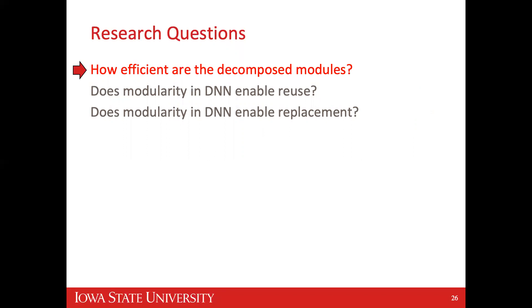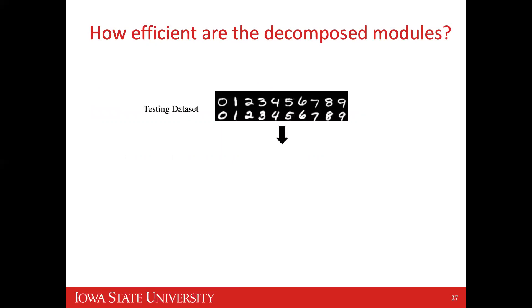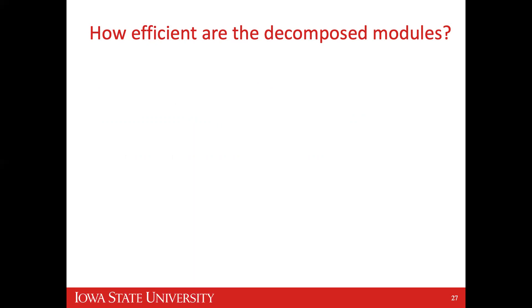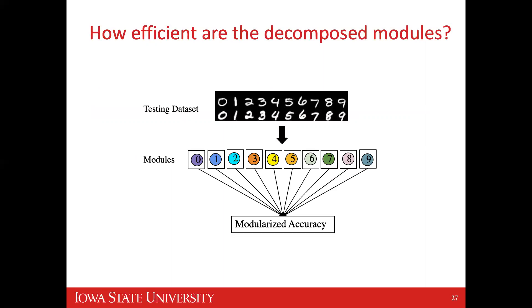We answer three research questions: How efficient are the decomposed modules? Does modularity in deep neural networks enable reuse? Does modularity in deep neural networks enable replacement? To answer these, we evaluate four proposed techniques for tangling identification, using best-approach accuracy and calculating the Jaccard index. We take the testing dataset, apply the modules, and calculate modular accuracy — the composed accuracy of the decomposed modules.